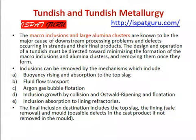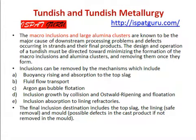Micro-inclusions and large alumina clusters are known to be major causes of downstream processing problems and defects in the cast strands and their final products. The design and operation of a tundish must be directed towards minimizing the formation of metallic inclusions and alumina clusters and removing them once they are formed. Inclusions can be removed by buoyancy, rising and absorption to the top slag, fluid flow control, inert gas bubble flotation, Ostwald ripening and flotation, and absorption to the lining. The final inclusion destinations include the top slag, the lining, the submerged entry nozzle, and the mold — posing possible defects to the cast product if not removed.